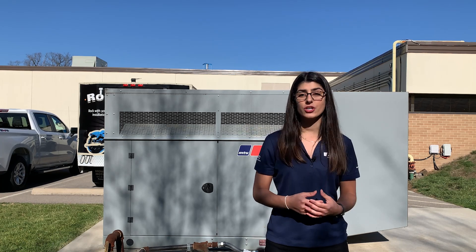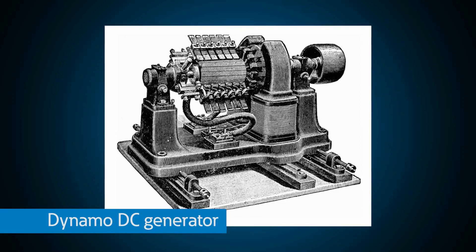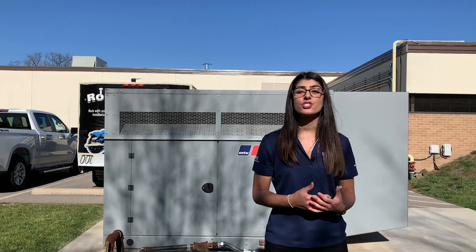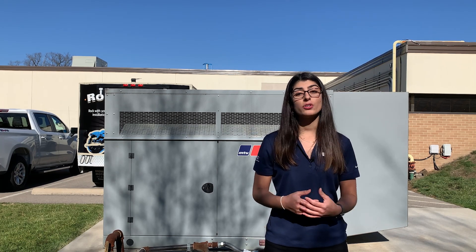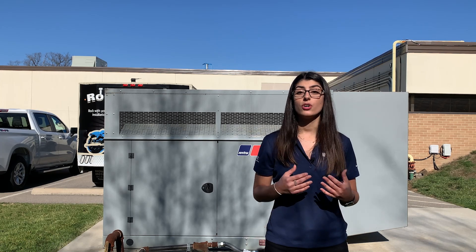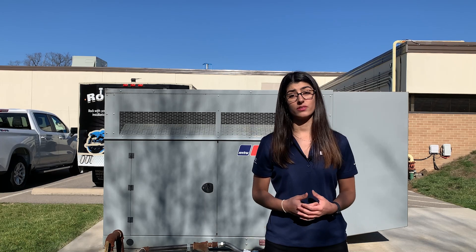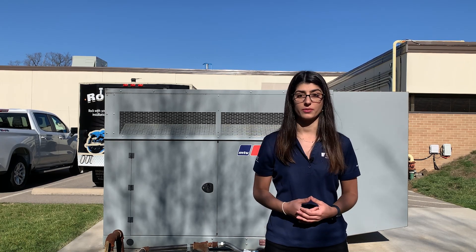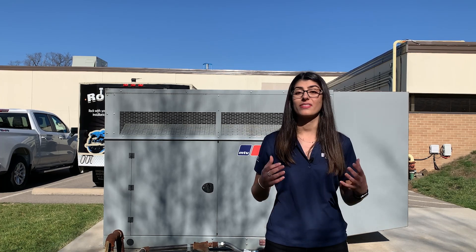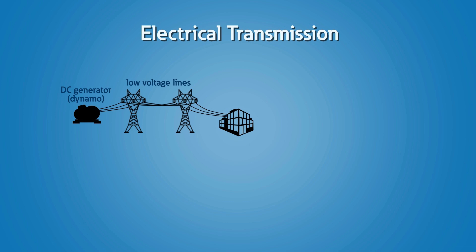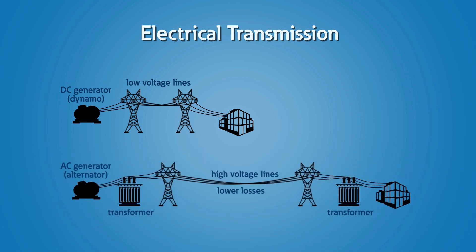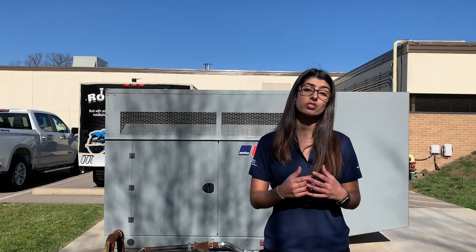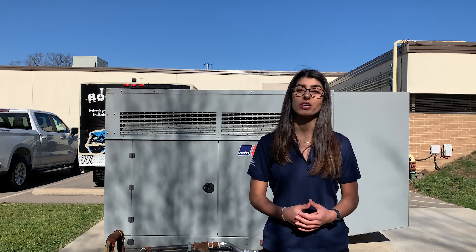Historically, the first generator invented was a direct current or DC generator called a dynamo. DC power produced by these generators was limited because the generation source had to be close to the loads. Then came alternating current produced by AC generators called an alternator or synchronous generator. A key advantage of an AC generator is that it works with a transformer, which can both increase and decrease voltage by thousands of volts, allowing power to be transmitted over long distance transmission lines. This is why AC generators power the bulk of the world's electricity grid today.